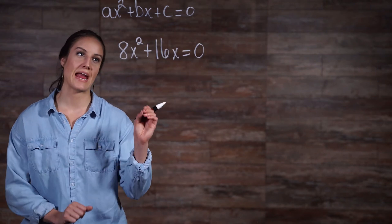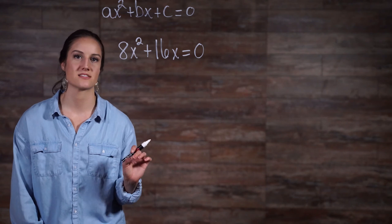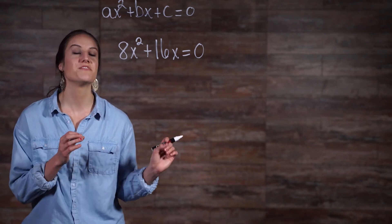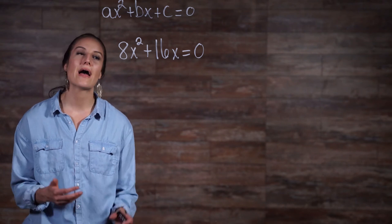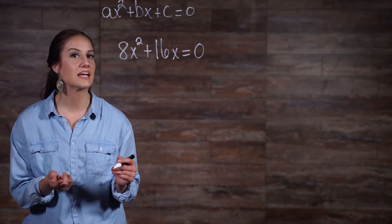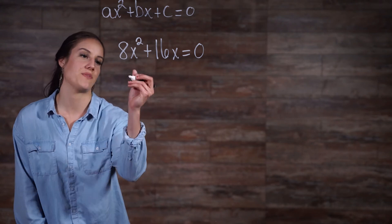So say we have the equation 8x squared plus 16x equals 0. What are the common factors? Well, 8 and 16 share a common factor of 8, so we can go ahead and factor out that 8.